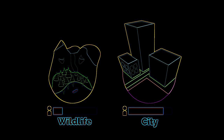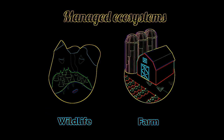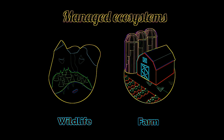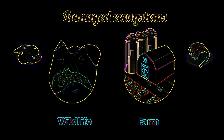Wild ecosystems are mostly free of man's influence and tend to be places like old growth forests and wildlife preserves. In contrast, managed ecosystems are actively modified by humans, like parks in the middle of a city and farms. While both wild and managed ecosystems are important, humans tend to favour managed ecosystems because they allow us to manipulate many of the ecosystems' components to maximise our benefit.